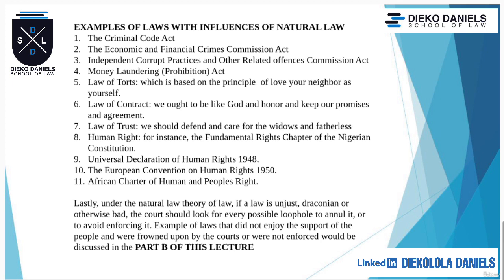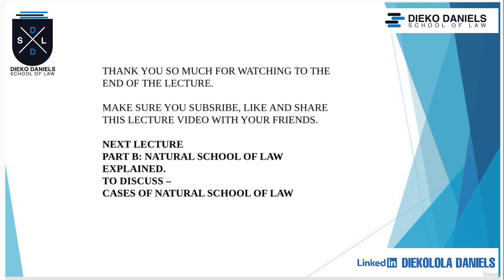Lastly, under the natural law theory, if a law is unjust, draconian, or otherwise bad, the court should look for every possible loophole to annul it or to avoid enforcing it. Examples of laws that do not enjoy the support of people and were frowned upon by the court or were not enforced will be discussed in Part B of this lecture. Thank you so much for watching to the end. Make sure you like, share, and subscribe, and share these videos to your friends. Our next lecture will cover Part B of the Natural School of Law — the cases. Make sure you follow me on LinkedIn. Dear Kolola Daniels — I will see you in my next class.